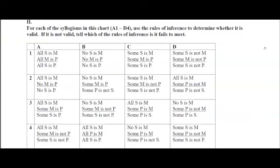Let's try B1. No S is M, no M is P, no S is P. Is there an affirmative premise here? It starts with 'no,' so no, there isn't. The affirmative proposition forms of categorical propositions are 'all S is P' and 'some S is P.' Here there's no affirmative premise, so it fails.